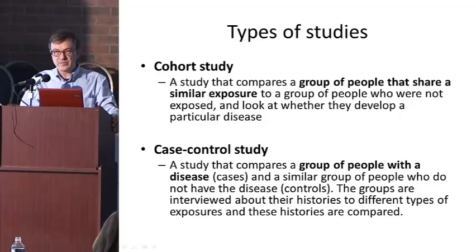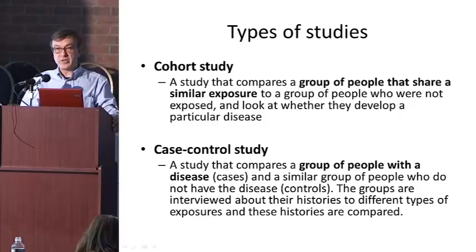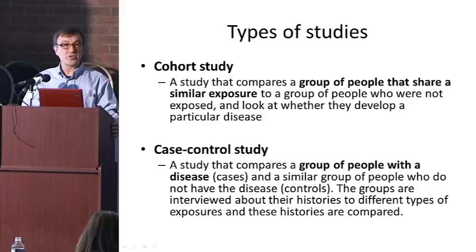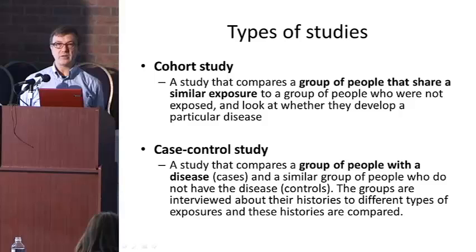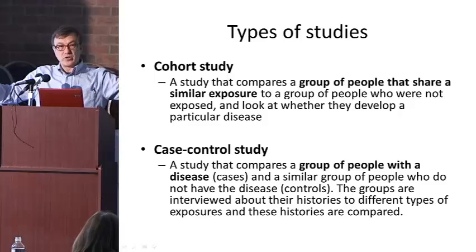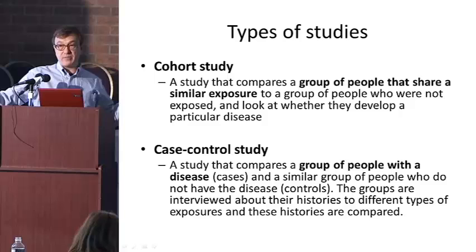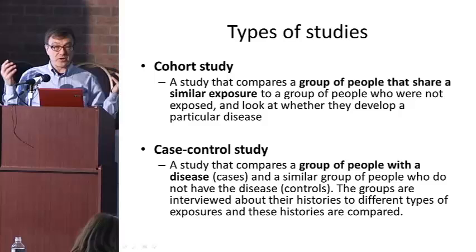In considering the human data — and these are human epidemiologic studies — predominantly they're what we would call cohort studies. For those who are not epidemiologists, these are studies of a group of people who share a similar exposure that we're interested in. We're generally looking back historically at records of a large group of people who had that exposure, then looking at their rates of cancer over time compared to people who didn't, or by levels of exposure to a particular agent or carcinogen.